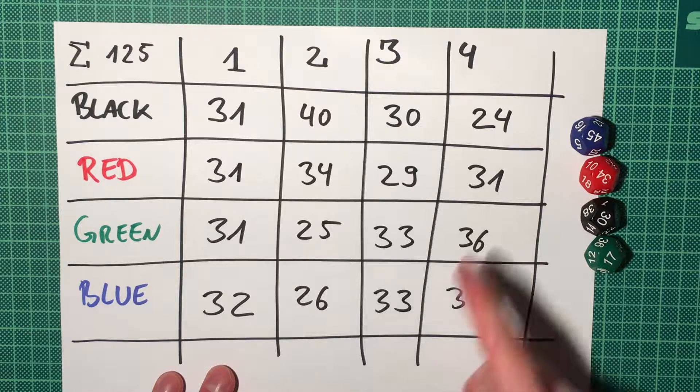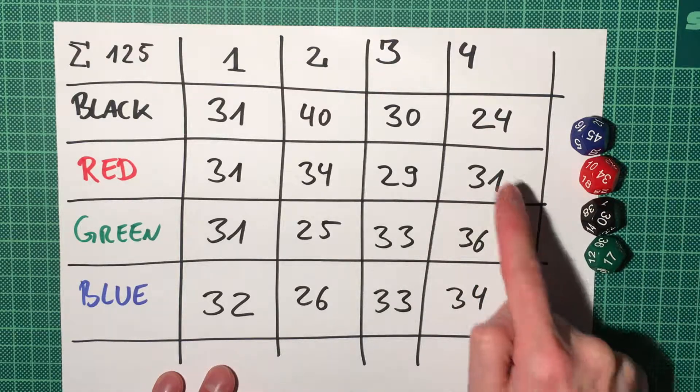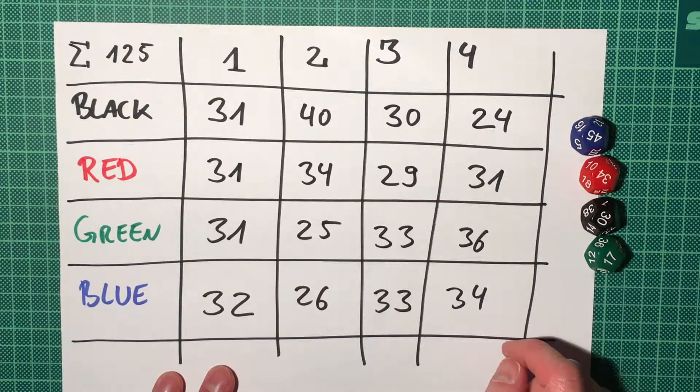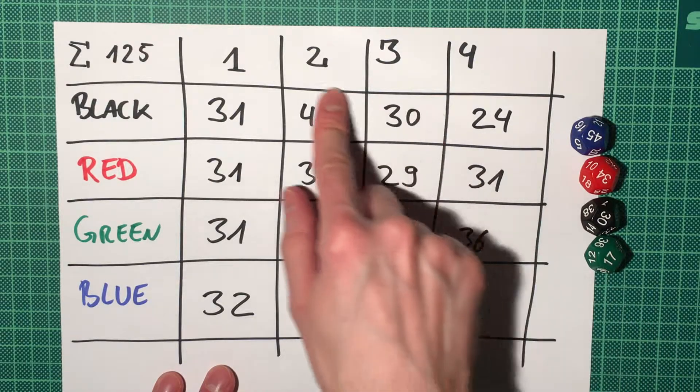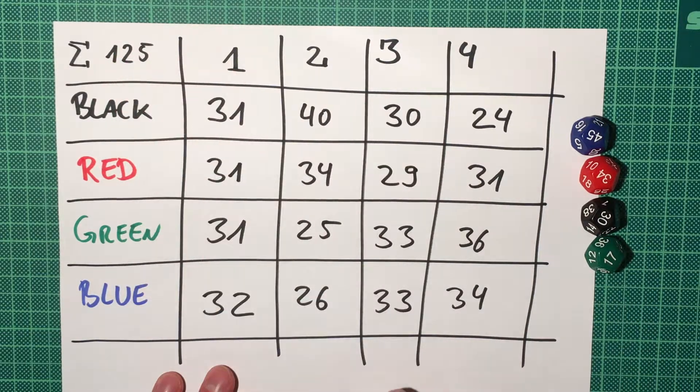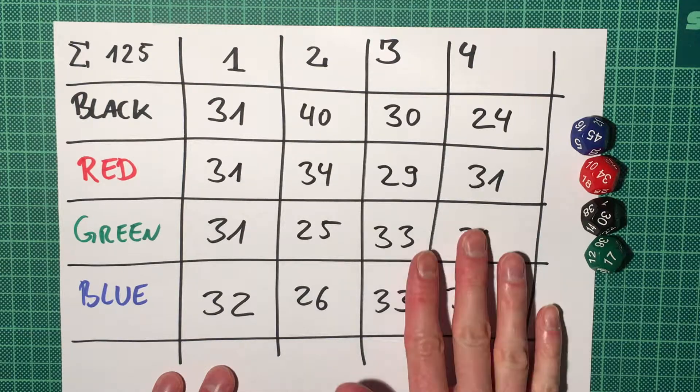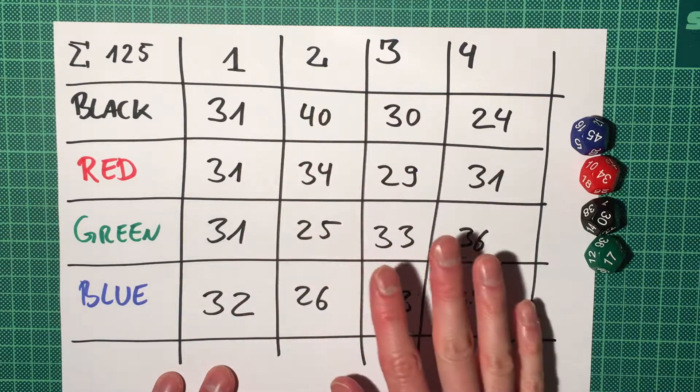Third place was again pretty fair, and the fourth place was biased a bit against black and a bit towards green and somewhat blue. But this is still not quite enough rolls, I think, to actually see if these dice are completely fair.